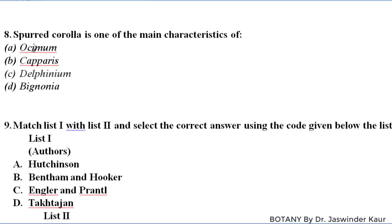Spurred corolla is one of the main characteristics — it is found in Delphinium. A spurred corolla is a corolla in which there are one or more petals which are spurred, meaning they have an outgrowth of tissues.